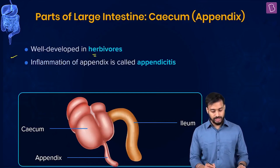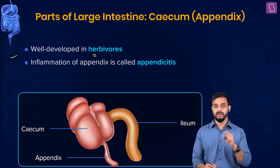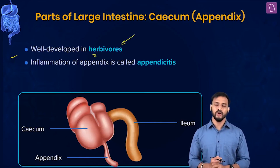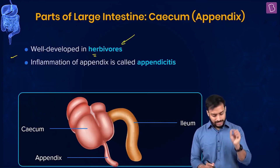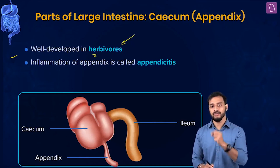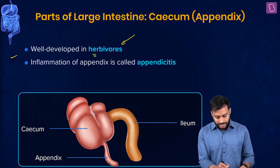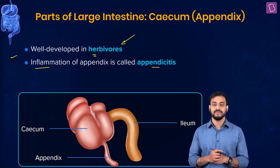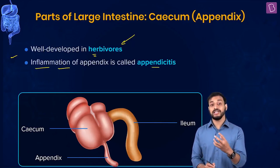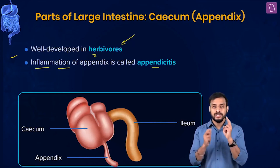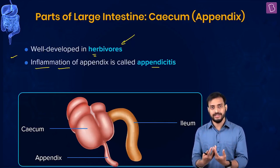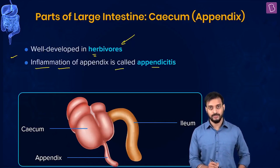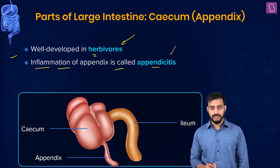The cecum is quite well developed in herbivores - try to find out why, that's your homework. Inflammation of the appendix is called appendicitis. At times this appendix has to be operated out, and this condition is known as appendicitis.